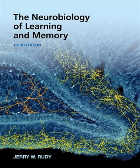6. Neurotransmitters and Neuromodulators. The author delves into the roles of neurotransmitters and neuromodulators in learning and memory. He discusses how molecules like glutamate, acetylcholine, and dopamine influence synaptic plasticity and cognitive processes.